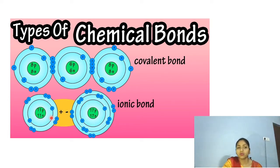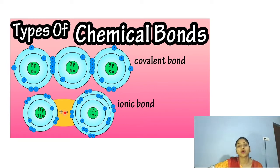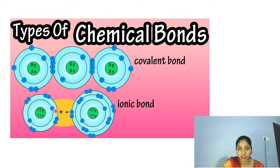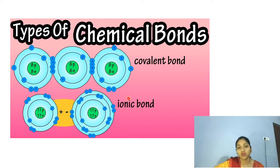Now looking at the lower diagram, here we have two atoms but there are no electrons in the outermost shell. You can see a positive charge and a negative charge, so there is an electrostatic force of attraction — that is called an ionic bond. Why are there charges? This is because of the transfer of electrons. A covalent bond can be defined as a chemical bond formed via the sharing of electrons between two atoms, whereas an ionic bond is formed via the transfer of electrons.